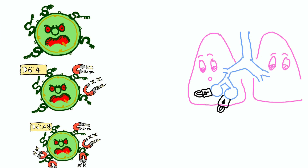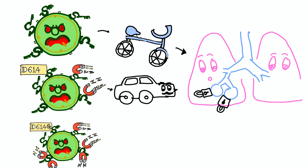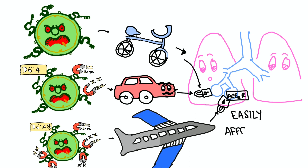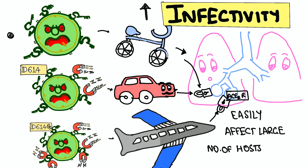With these variants coming into existence, the speed of transmission of COVID increased dramatically. We can compare the speed like a bicycle for normal COVID, and a car and an airplane for these COVID variants — as they have lots of magnets to get attracted to our respiratory system. They can easily affect a large number of hosts. This is nothing but infectivity.